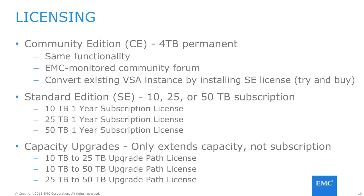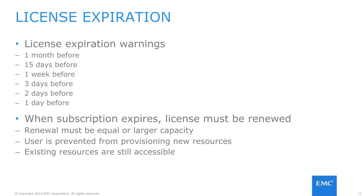As mentioned previously, the free community edition works up to 4TB. If an administrator wants to convert an already running free edition into a professional standard edition, they can do so by purchasing and installing a standard edition license in either 10TB, 25TB, or 50TB one-year subscription options. There are also capacity upgrade options to go from a lower capacity limit to a higher capacity limit. Note that this only extends the capacity limit itself and not the subscription time. In terms of licenses, there will be warnings generated by Unity VSA to tell users when they are nearing the end of the license subscription period at varying times.